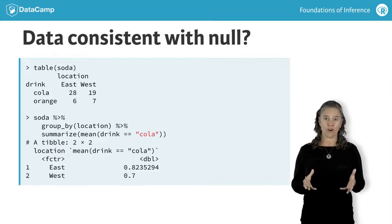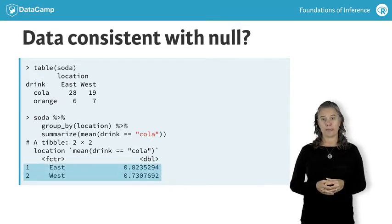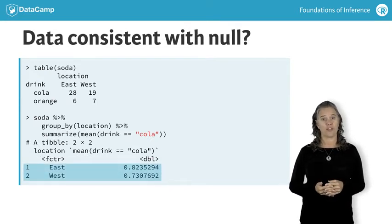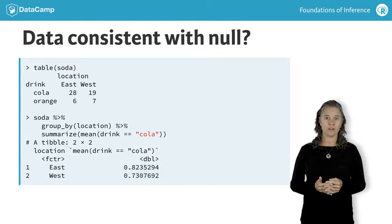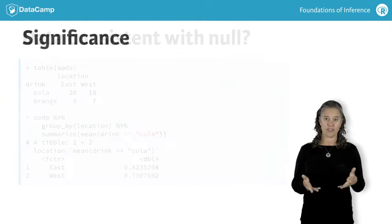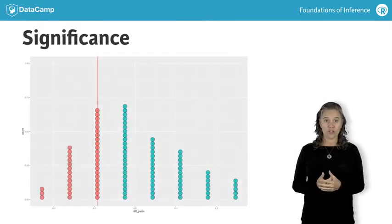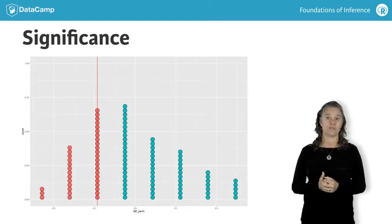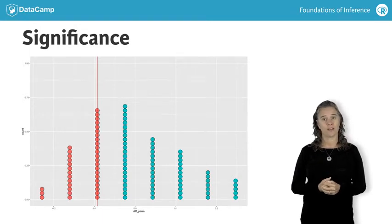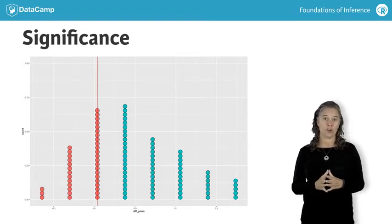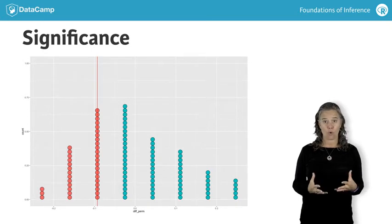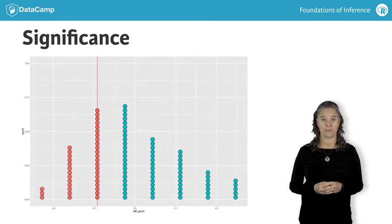Using R, recall that 9% more people on the east coast prefer COLA than those on the west coast. On the dot plot, the null statistics which are more extreme compared to the observed statistic are colored red. We can see that about a third of the null statistics are as or more extreme than what we observed.